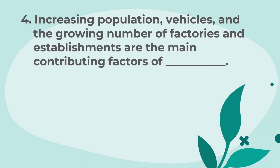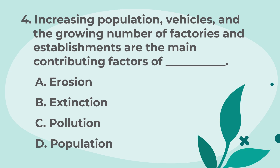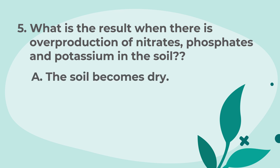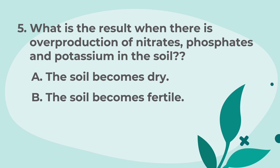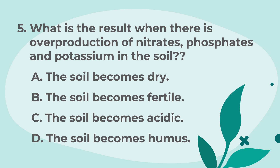Number 4: Increasing population, vehicles, and the growing number of factories and establishments are the main contributing factors of — A. Erosion. B. Extinction. C. Pollution. D. Population. Number 5: What is the result when there is overproduction of nitrates, phosphates, and potassium in the soil? A. The soil becomes dry. B. The soil becomes fertile. C. The soil becomes acidic. D. The soil becomes humus.